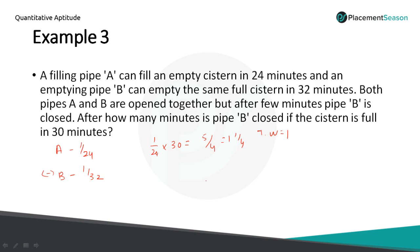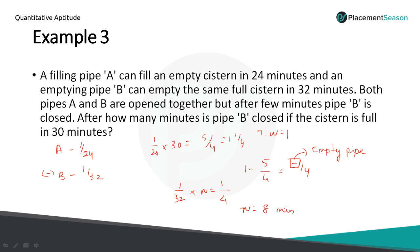Solving by the same method: total work equals 1, minus 5 by 4 completed by A gives minus 1 by 4. The negative sign indicates it is the emptying pipe's work. B's 1-minute work is 1 by 32, and it works for N minutes to account for 1 by 4. So N equals 32 by 4, which is 8. The emptying pipe B was closed after 8 minutes.